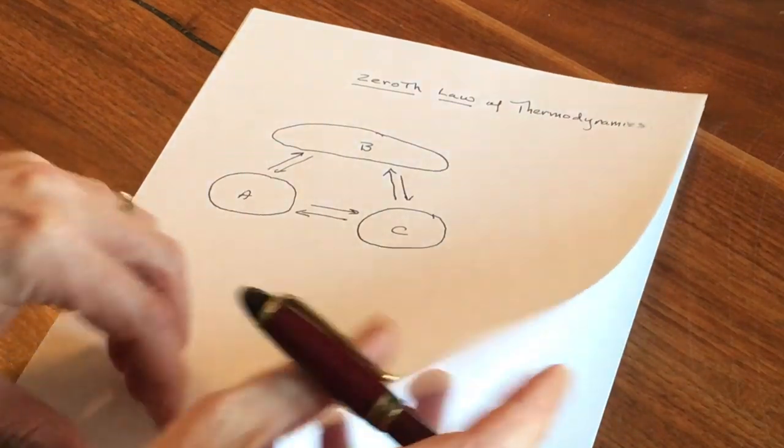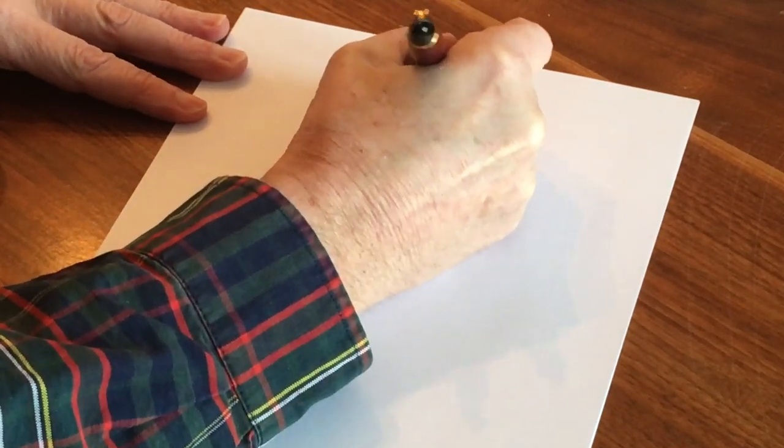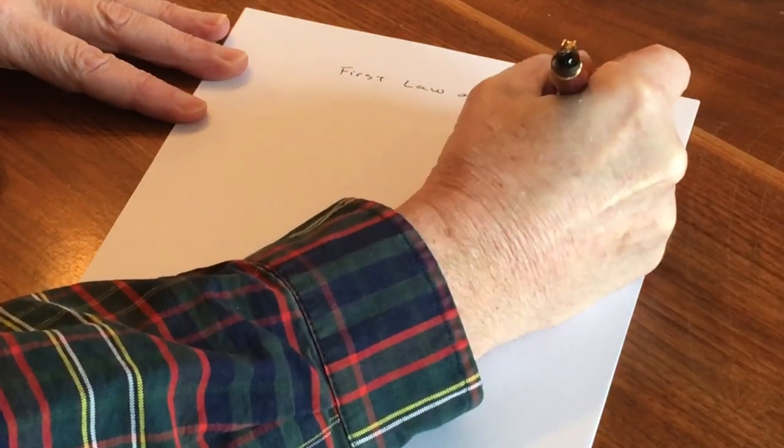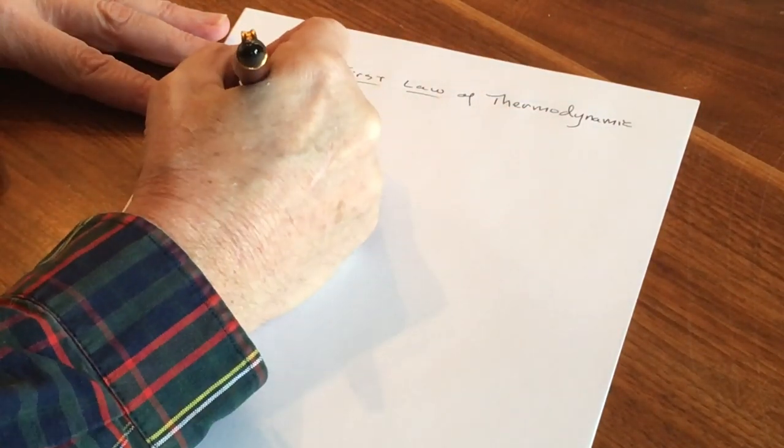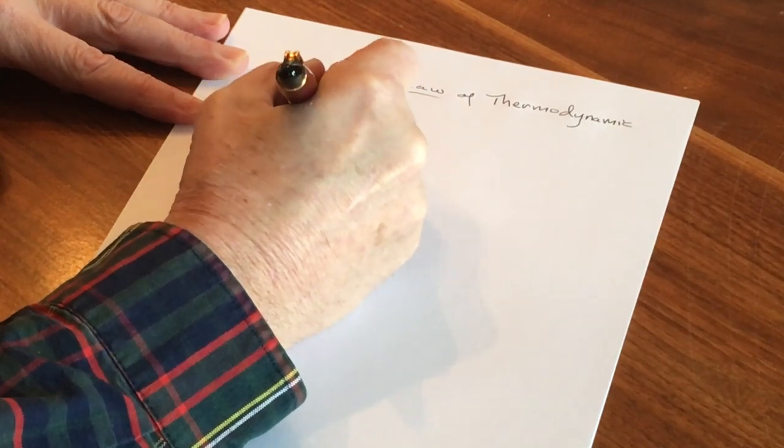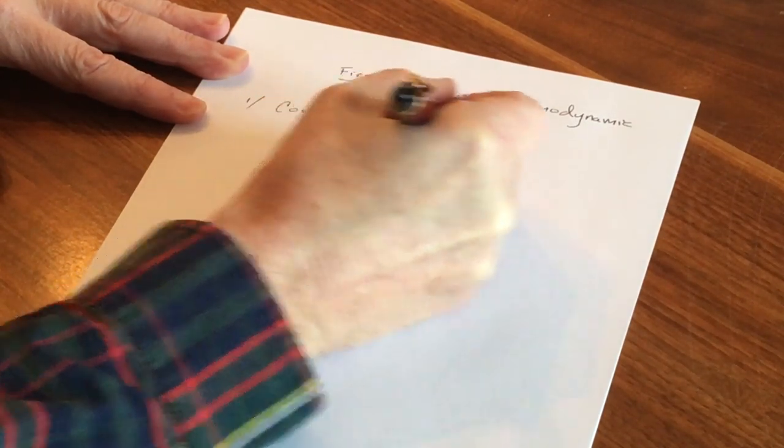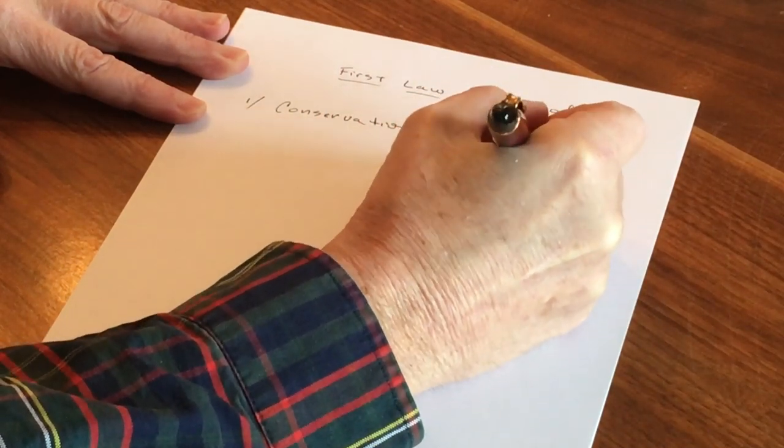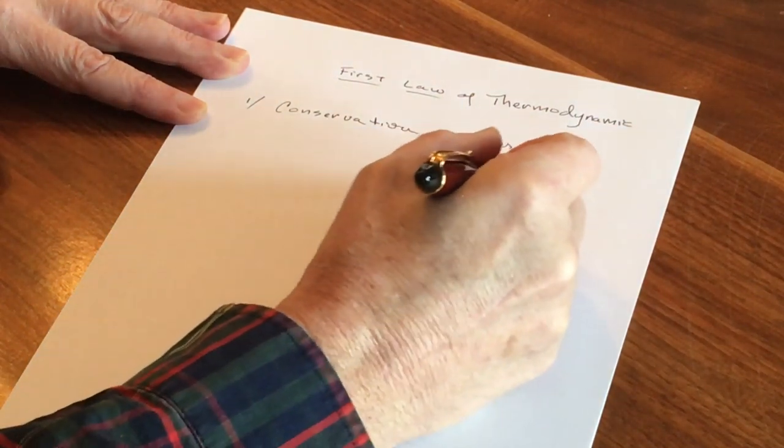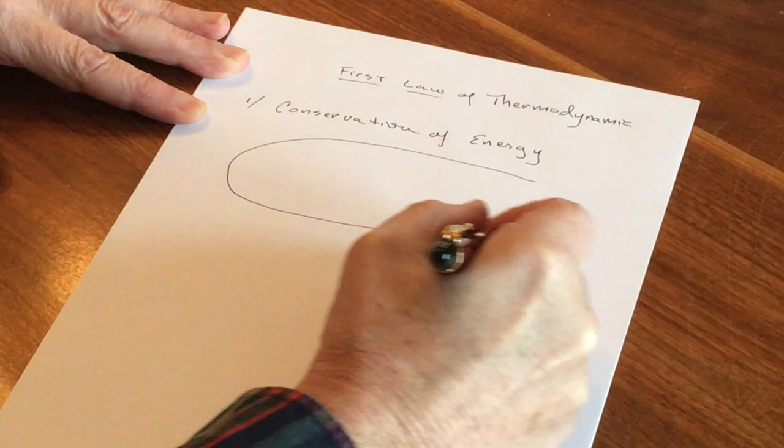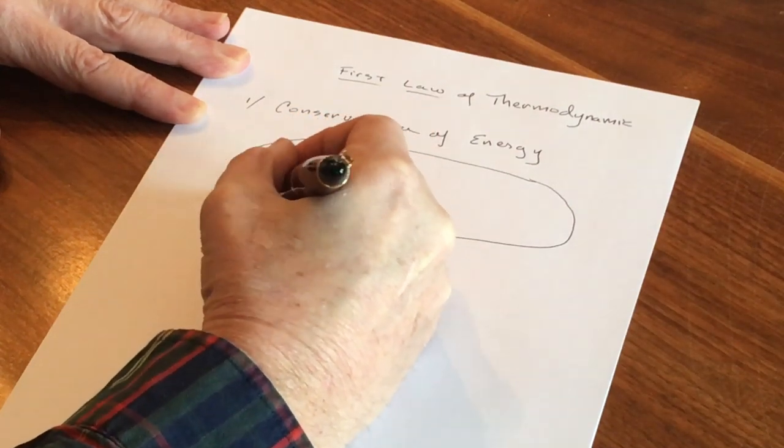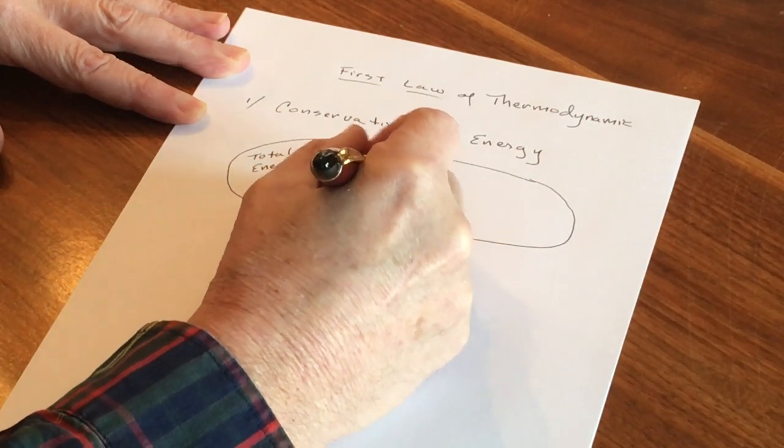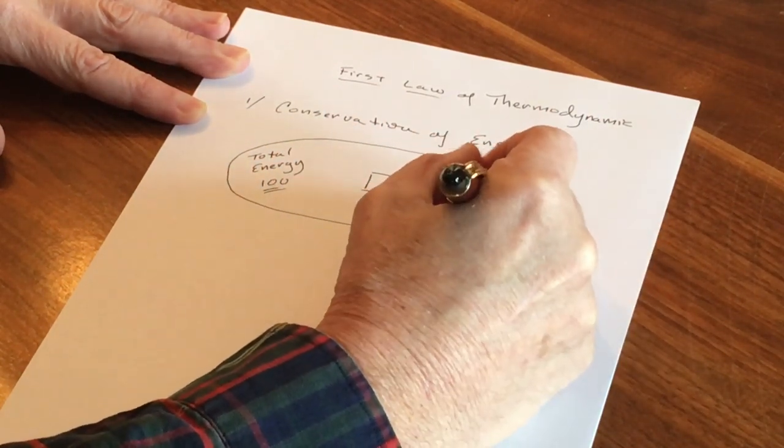Well, the zeroth law was pretty straightforward. Let's go on to the first law of thermodynamics. The first law of thermodynamics has a couple of parts. The first one is the conservation of energy. Once again, we'll have a look at three systems. Two systems contained within a third. Now, if the total system contains 100 units of energy, system A contains 50 units and system B contains 50 units. If some work is performed to cause system A to lose 10 units of energy to system B, it will end up with 40 units of energy and system B will end up with 60. However, the total amount of energy within system C will still be 100.